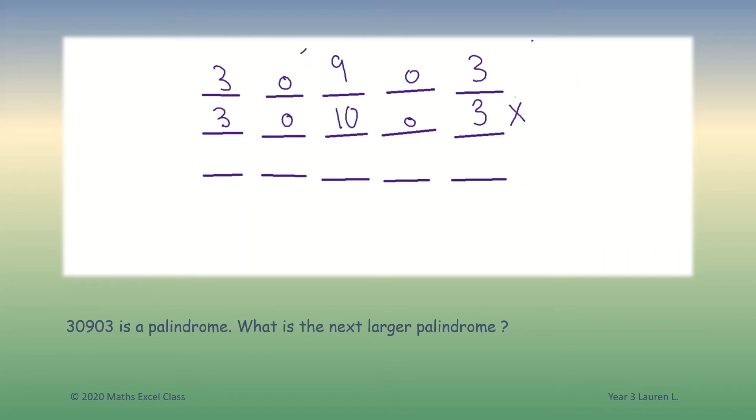Our second attempt could be using the first three numbers of 30903, then adding this by one and creating our palindromic number, which would be 309 plus one...